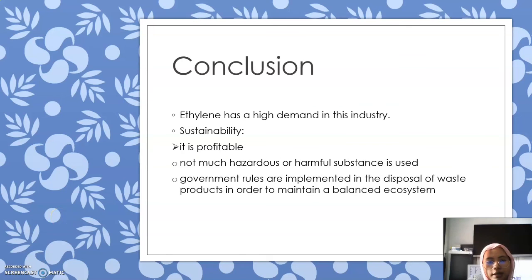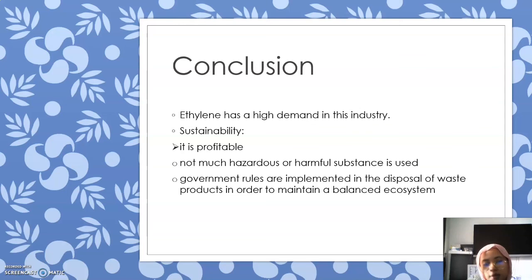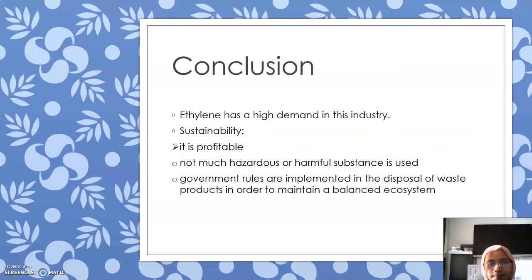In conclusion, ethylene has high demand in the chemical industry, and polyethylene is extremely produced using ethylene. Furthermore, ethylene is also used in agricultural practices such as ripening fruits and germination of seeds. In the aspect of sustainability, this process is profitable and economically sound. In the environmental aspect, not many hazardous substances are used in the production of ethylene. Lastly, government regulations are implemented in the disposal of waste products in order to maintain a balanced ecosystem.